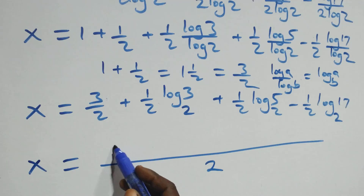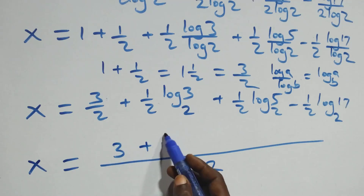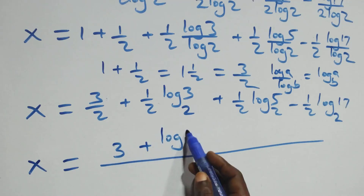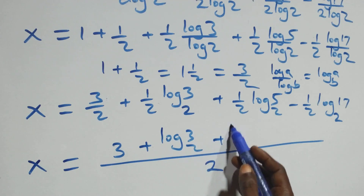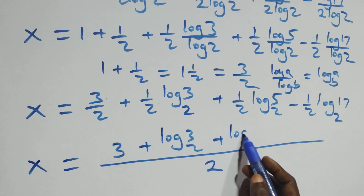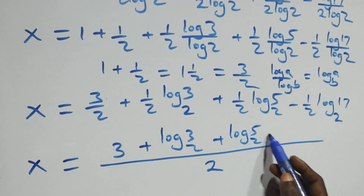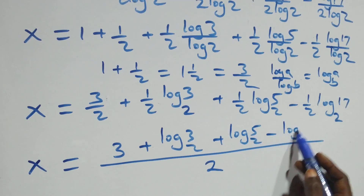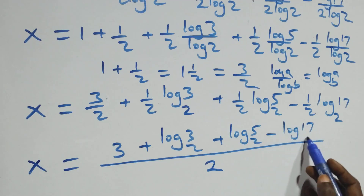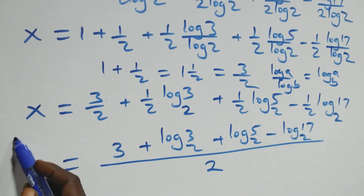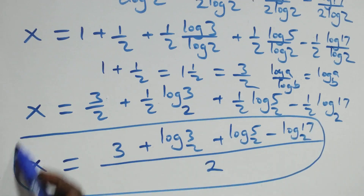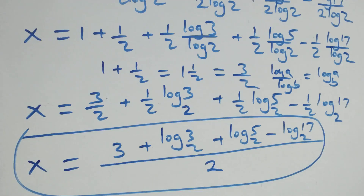Bringing this together as one fraction over 2: x equals (3 + log₂3 + log₂5 − log₂17) / 2. Now let's verify this answer satisfies the original equation.